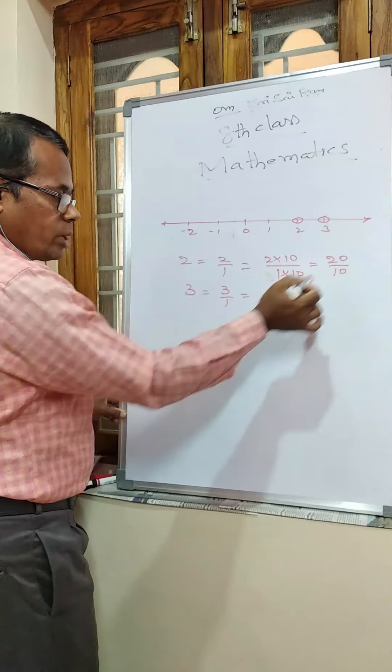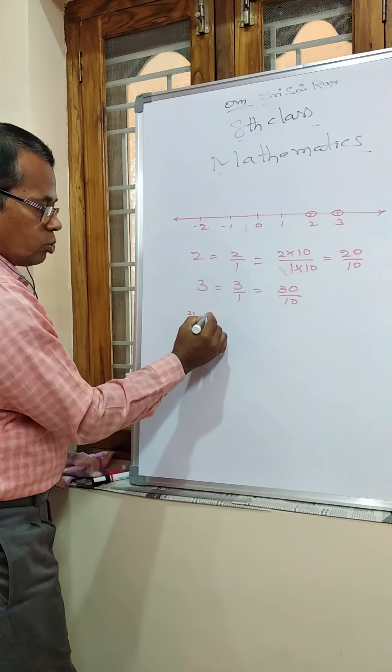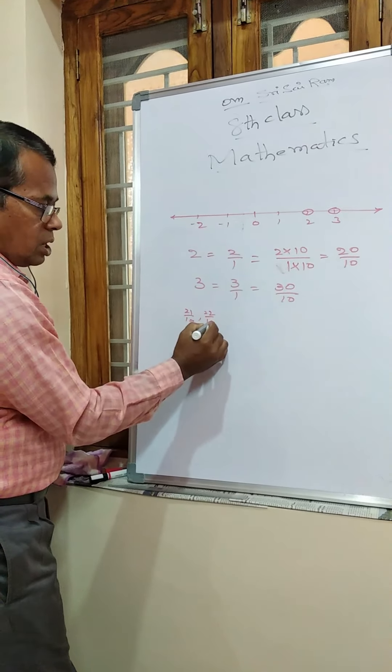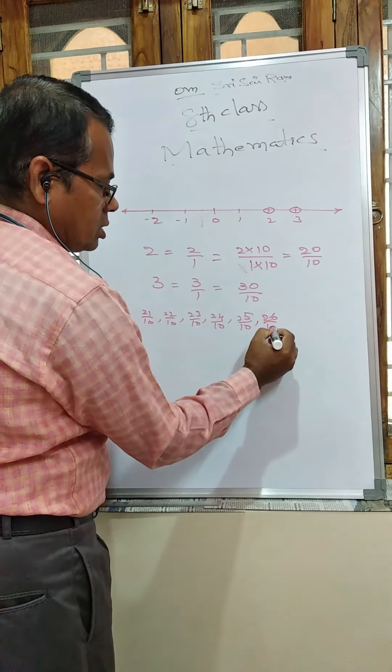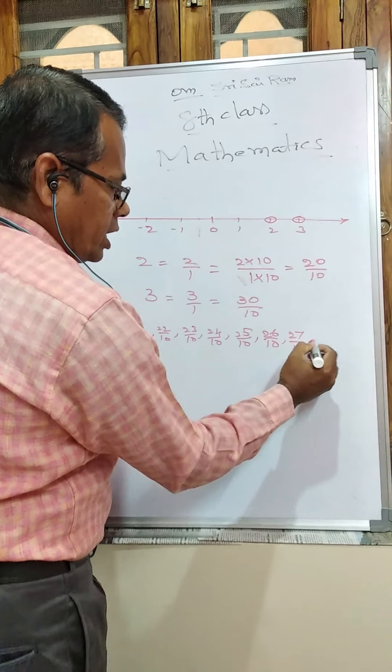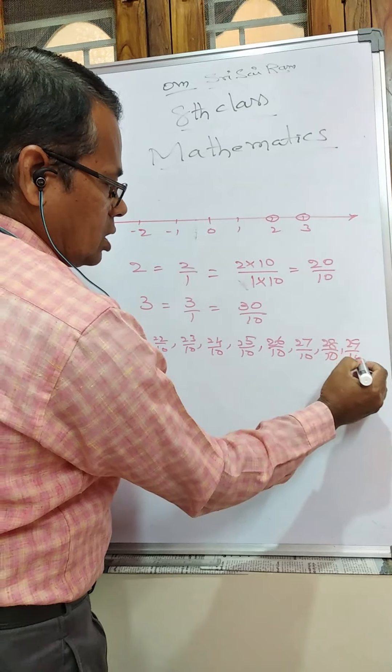How many rational numbers are between 20/10 and 30/10? We have 21/10, 22/10, 23/10, 24/10, 25/10, 26/10, 27/10, 28/10, 29/10. There are 9 rational numbers between 20/10 and 30/10, which means there are 9 rational numbers between 2 and 3 when the denominator is 10.